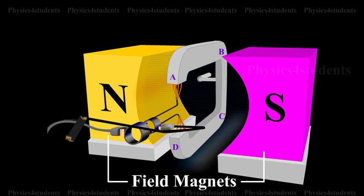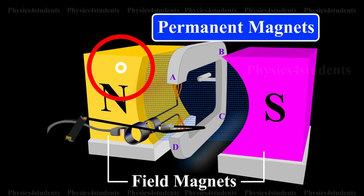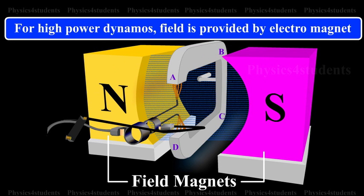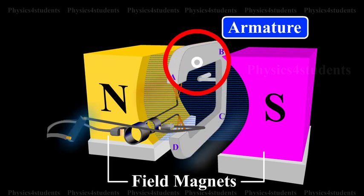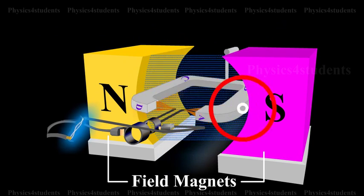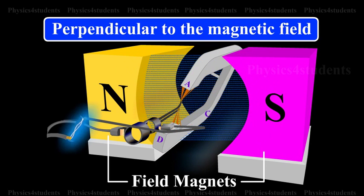Field Magnets: The necessary magnetic field is provided by permanent magnets in the case of low-power dynamos. For high-power dynamos, field is provided by electromagnet. Armature rotates between the magnetic poles such that the axis of rotation is perpendicular to the magnetic field.